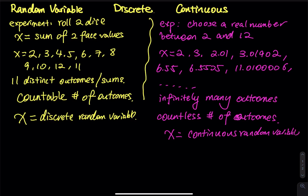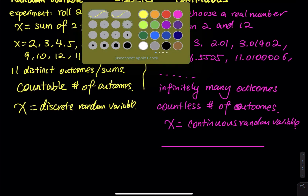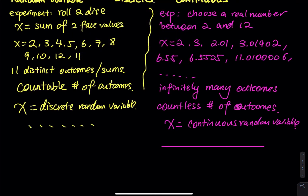What is the difference between discrete and continuous? Discrete has a countable number of outcomes; continuous has a countless or not-countable number of outcomes. For a continuous random variable, I draw a line; for a discrete random variable, I draw a few dots. The dots — I can use my finger to count them: one, two, three, four, five, six, seven, eight. There are eight dots, so that is a countable number of outcomes.